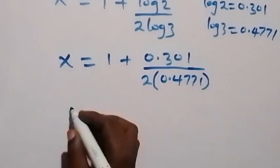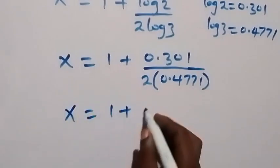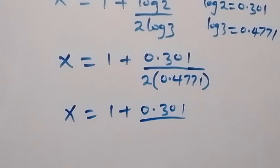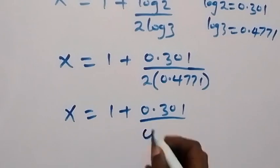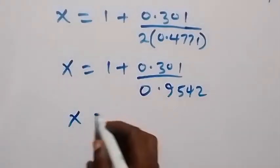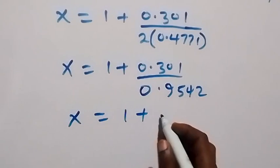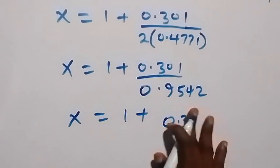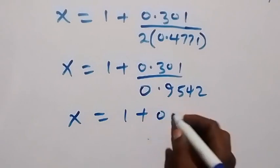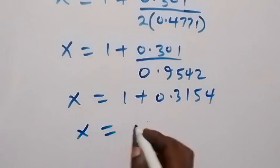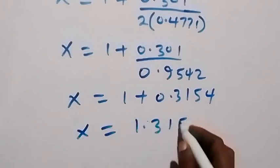This is the same as x equals 1 plus 0.301 over 0.9542. When we divide here, we have x equals 1 plus 0.3154, which equals 1.3154.